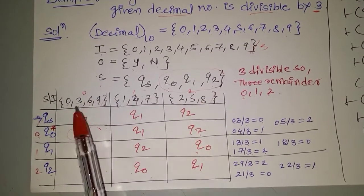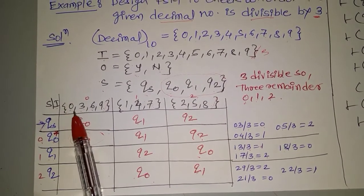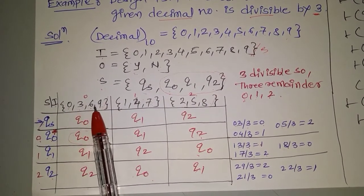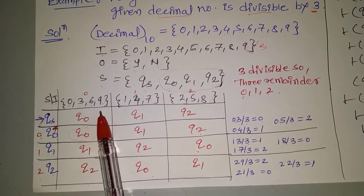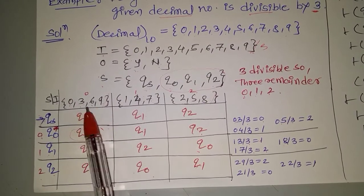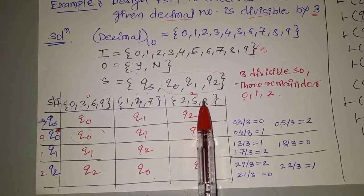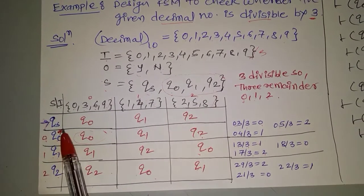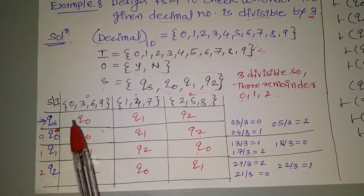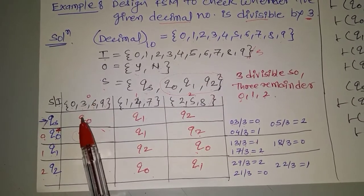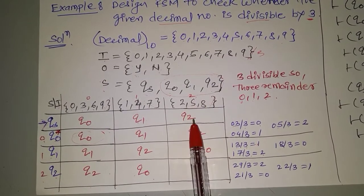Q1 is denoted by remainder 1 and Q2 is denoted by remainder 2. There are three columns: remainder 0, remainder 1, and remainder 2. Remainder 0 is denoted by digits 0, 3, 6, 9 — because when these numbers are divided by 3, the final remainder is 0. Similarly, remainder 1 digits give remainder 1, and remainder 2 digits give remainder 2. So remainder 0 is denoted by Q0, remainder 1 by Q1, and remainder 2 by Q2.